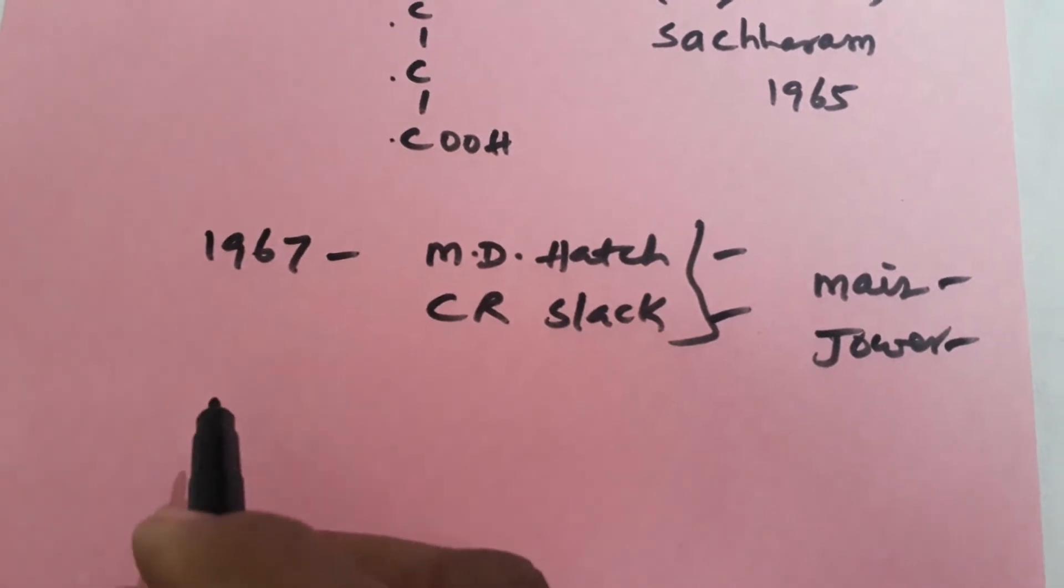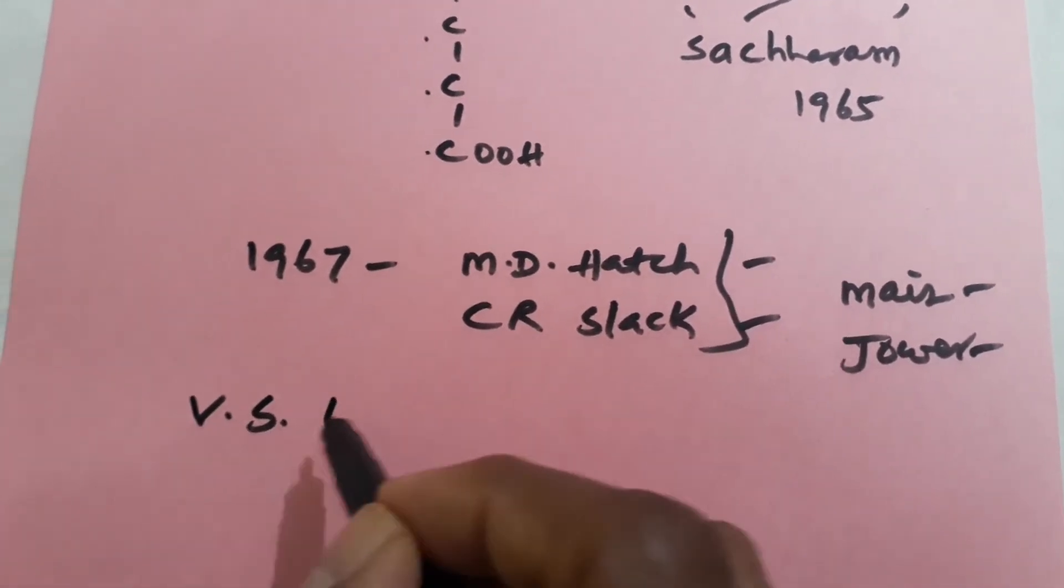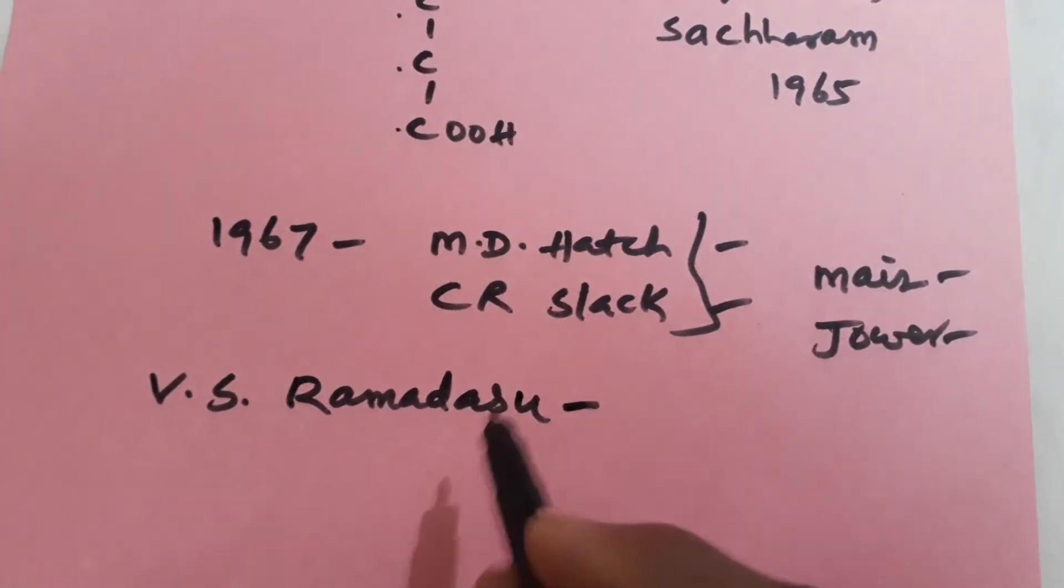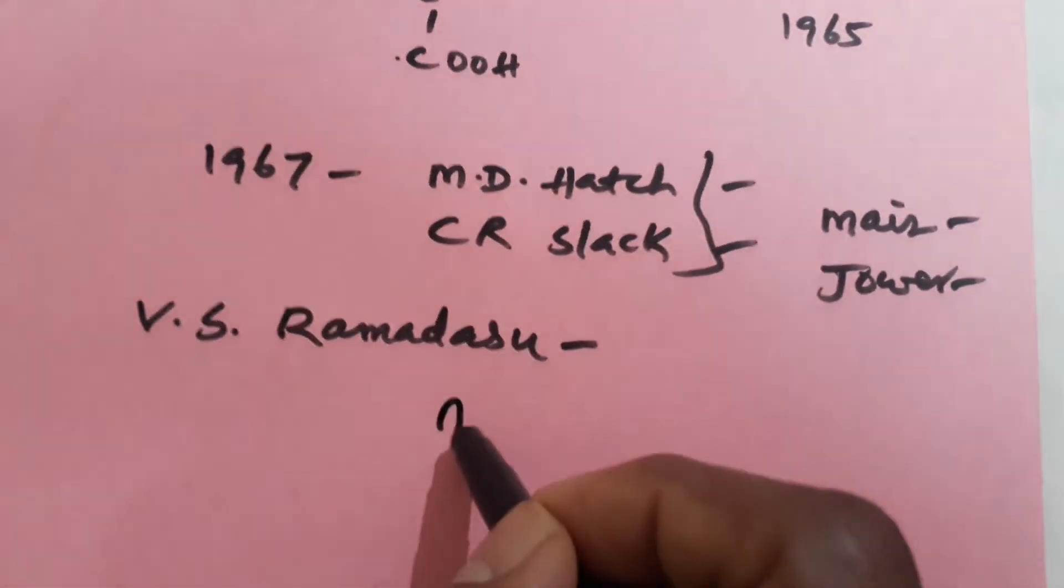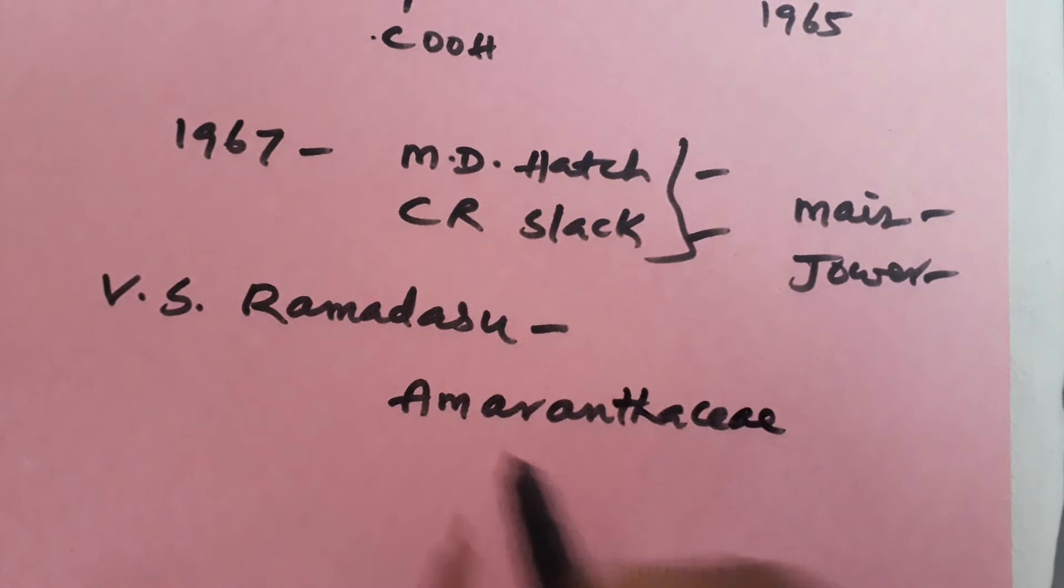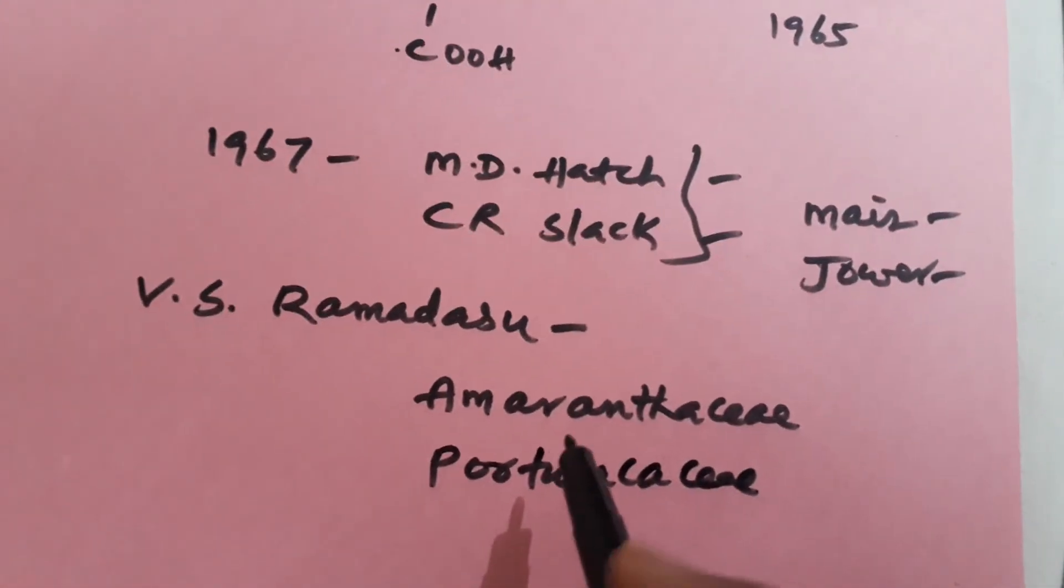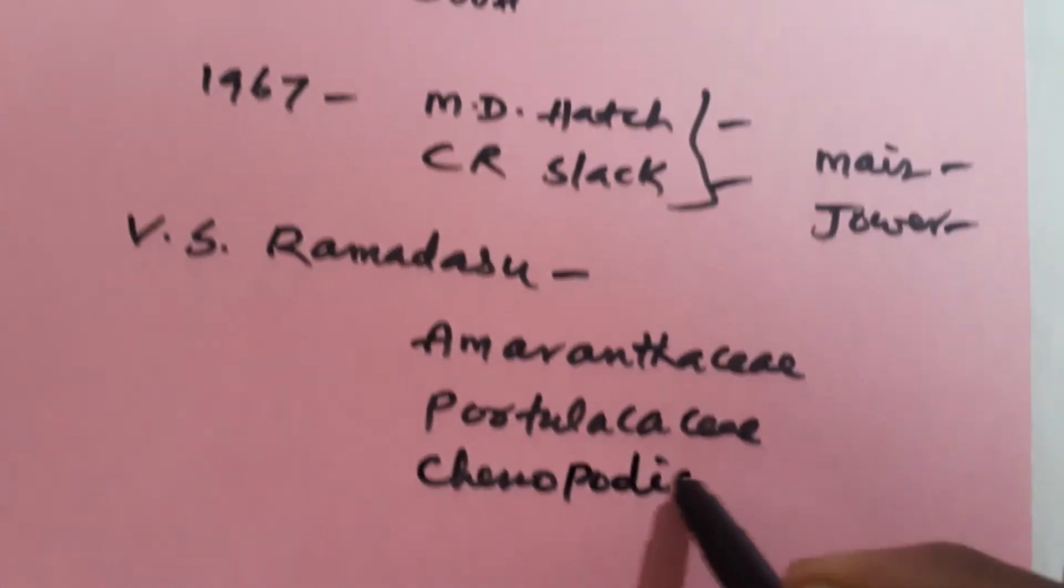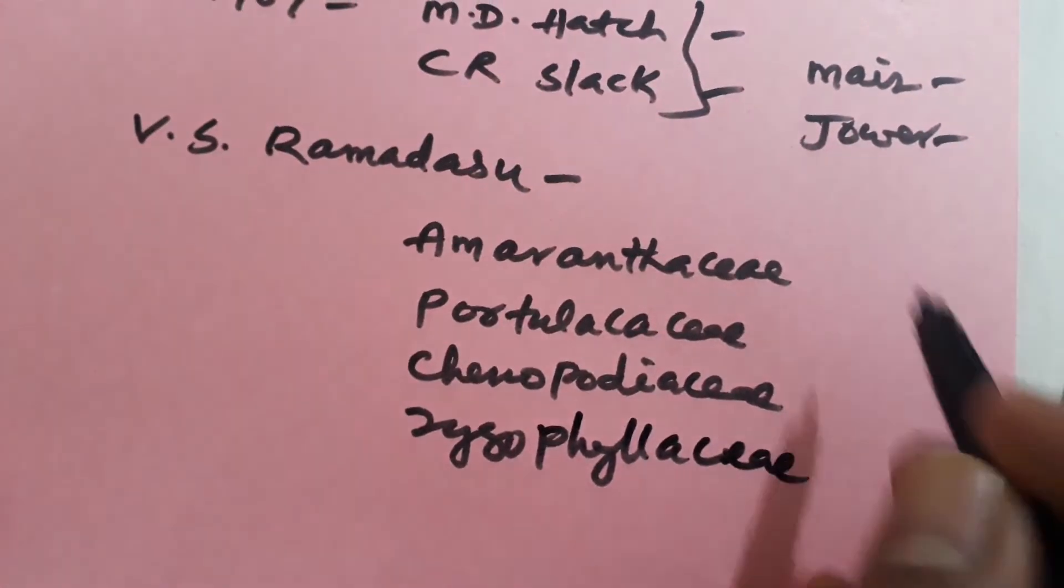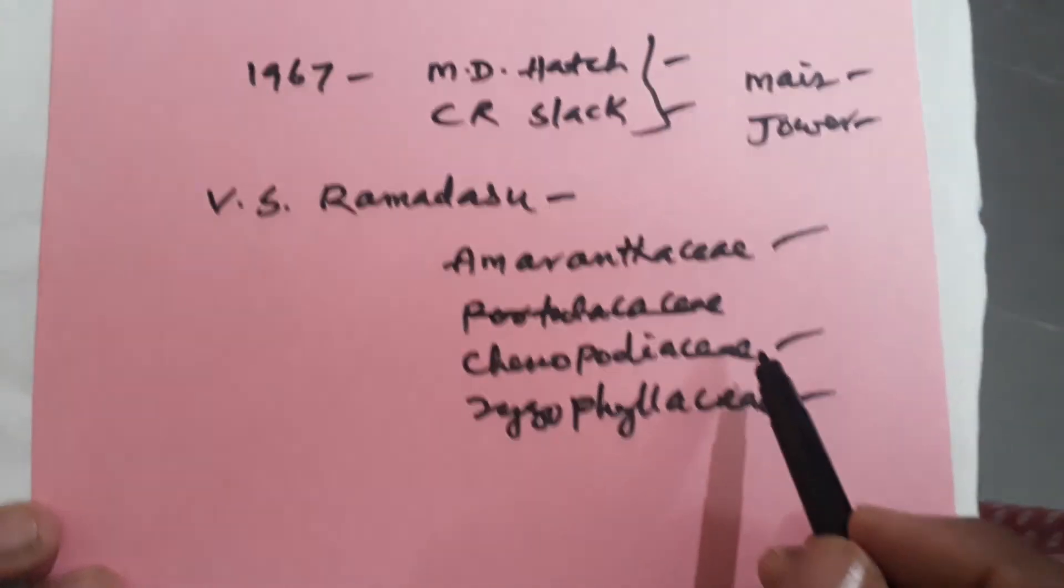One popular physiologist working as professor in Tirupati University, V.S. Ramadasu, did more investigations on the C4 pathway. The family members are Amaranthaceae, Portulacaceae, Chenopodiaceae, and Zygophyllaceae. Only these 3 family members exhibit C4 pathway, but actually these are dicotyledon plants.